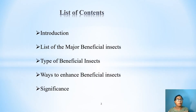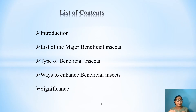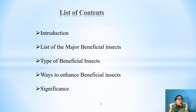Let me tell you about the main subtopics that we are going to cover in this lecture. Firstly, we will have a brief introduction of these insects. After introduction, we will try to figure out some major beneficial insects. Thereafter, types of beneficial insects will be taken into account. That will be followed by how the number of those insects can be increased, and finally we will discuss the significance of beneficial insects.